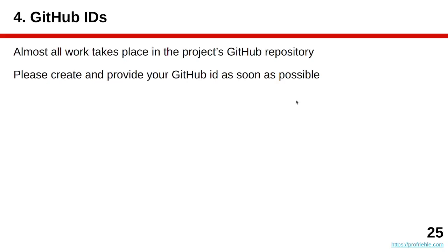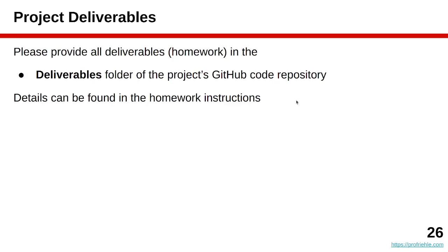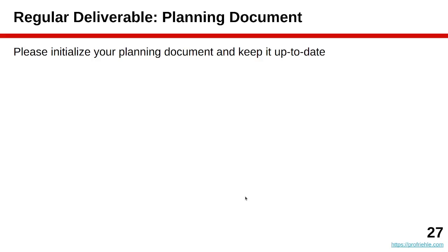If you don't have a GitHub ID yet, create one. On GitHub you will already have found your code repository and been invited to work on it — that's where the project work takes place. Deliverables are also uploaded there: you commit them to the deliverables folder in a sprint-specific subfolder. Don't send deliverables by email or through the course management system. Set up your planning document and keep it up to date, committing it as part of the weekly deliverables.